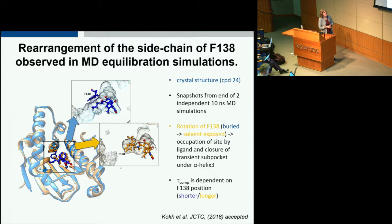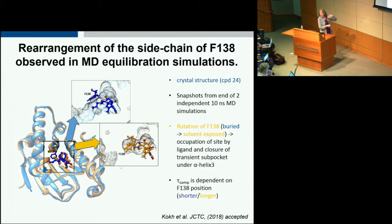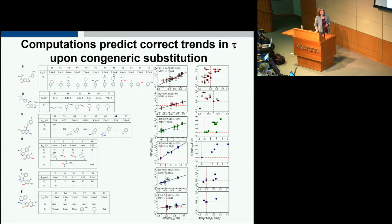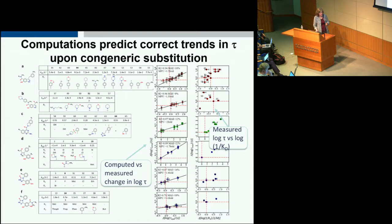Another source of variation is protein conformational sampling: two equilibration snapshots differing only in a phenylalanine side chain orientation lead to shorter or longer computed residence times, because when phenylalanine flips inward it hinders ligand exit. This is a general sampling issue for kinetics calculations. Within congeneric series we can correctly compute trends, both where there is and is not a relationship between off-rate and binding affinity.